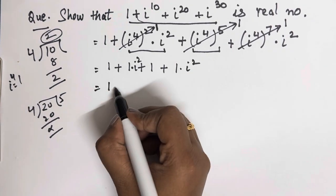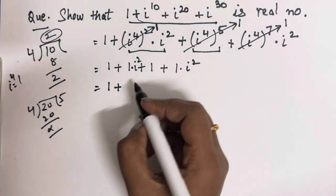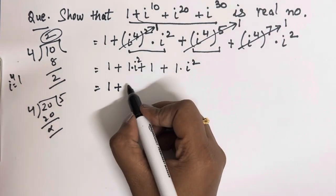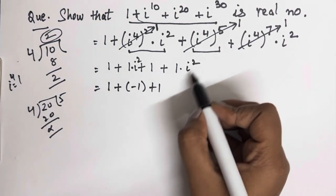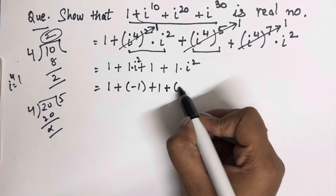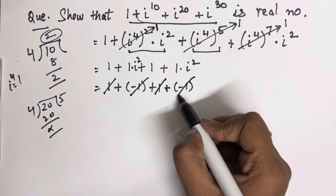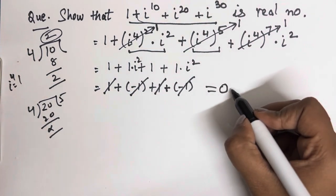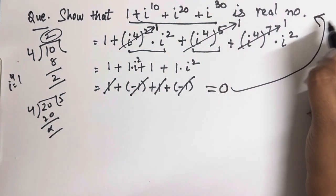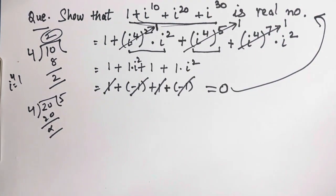Now we have 1 plus 1 into iota square. Iota square is minus 1, so we get plus 1 plus 1 into minus 1. Plus 1 cancels out with minus 1, and the result becomes 0. So 0 is a real number — this whole expression is a real number. That was the first question; now we will move on to the second one.